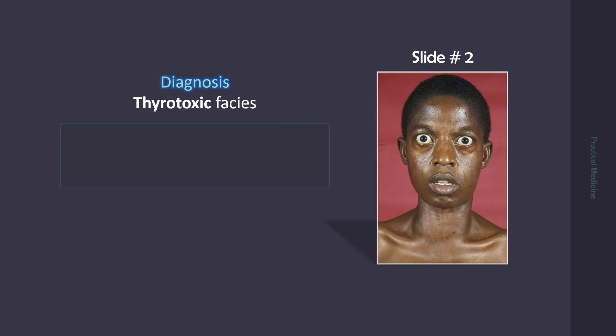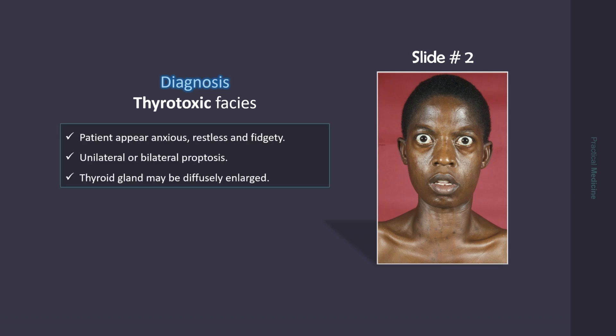This is thyrotoxic facies, seen in thyrotoxicosis. The patient will appear anxious, restless, and fidgety. There may be unilateral or bilateral proptosis, and the thyroid gland may be diffusely enlarged.